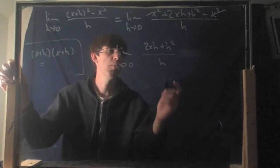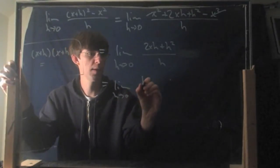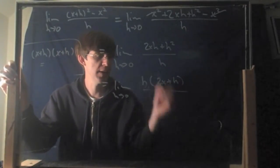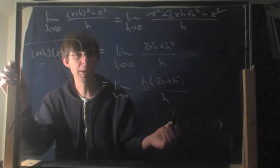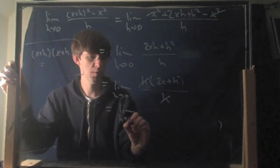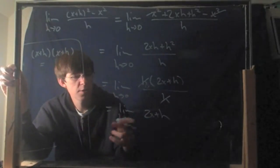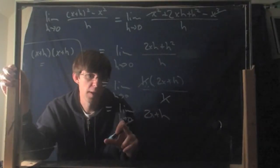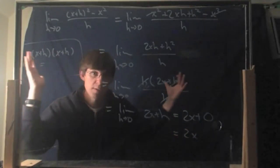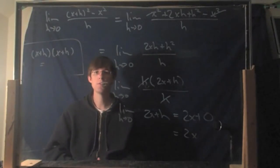Everything on the top has a factor of h, so pull the h out: h times (2x + h), divided by h. Cancel the h's. Now you have the limit as h goes to 0 of (2x + h). When you take the limit, you just plug in h = 0, and you get 2x + 0, which is 2x. The derivative of x² turns out to be 2x.